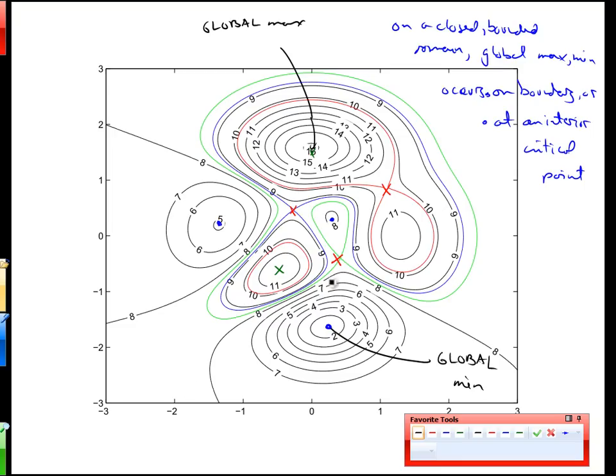So again, critical point analysis, the point of it is to focus our attention. We know if we're looking for global max and min on a region that we have to consider the boundary, but how would I figure out which point is absolutely the lowest on this whole domain? Well, there's an infinite number of points on here, right? How do I pick them? We're guaranteed that the minimum, if it's inside the region, is going to occur only at a critical point.